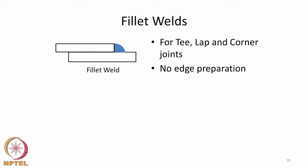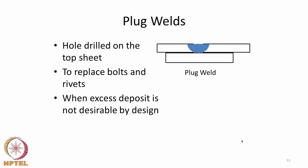Fillet welds are used to join materials in lap, T, and corner geometries with no edge preparation required, though a filler is needed. Plug welds are essentially permanent replacements for mechanical fastening: holes are drilled in the top sheet, a weld bead is deposited to cover the hole with deposited material, and these are used when there is no design possibility for an excess deposit. Plug welds can also be called spot welds.